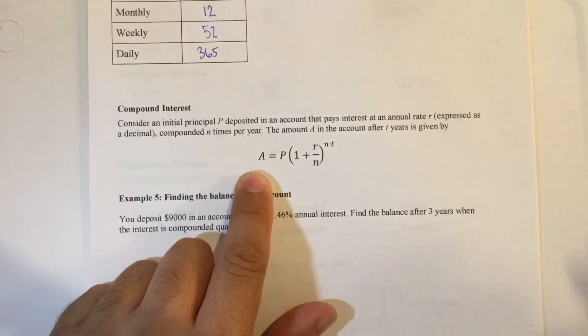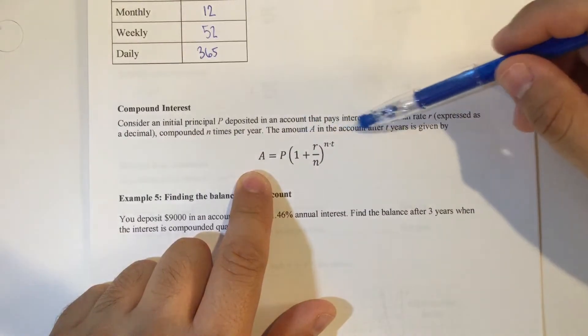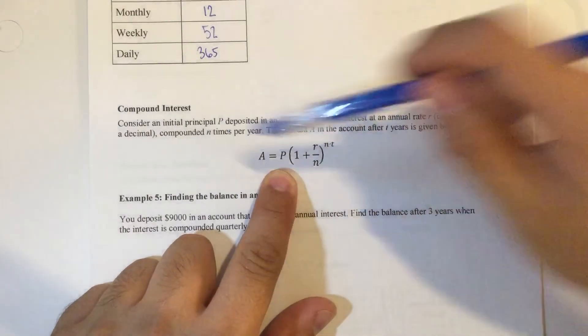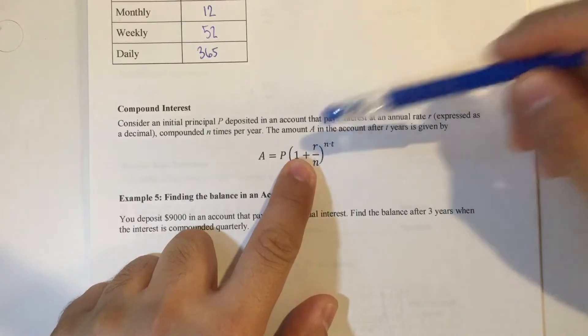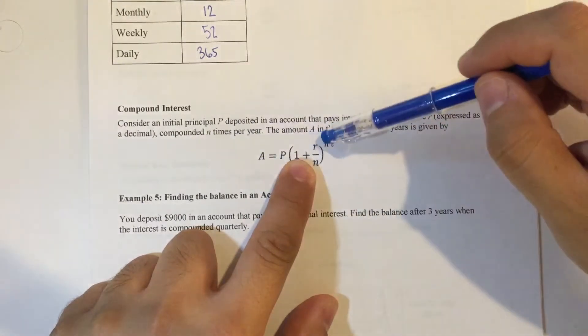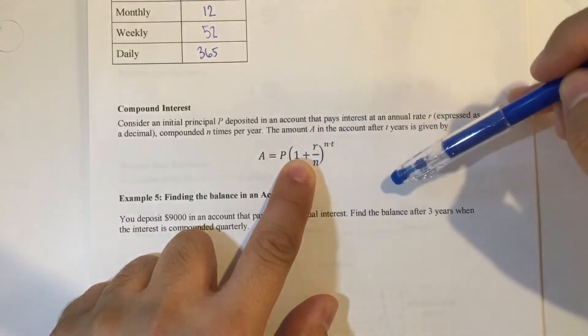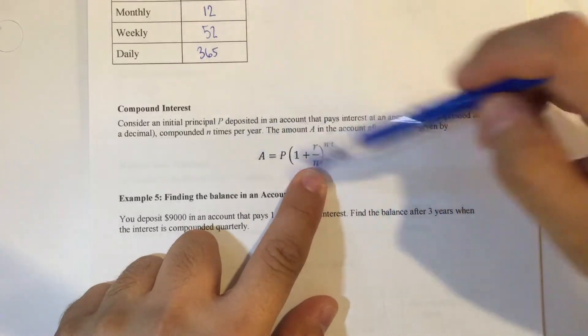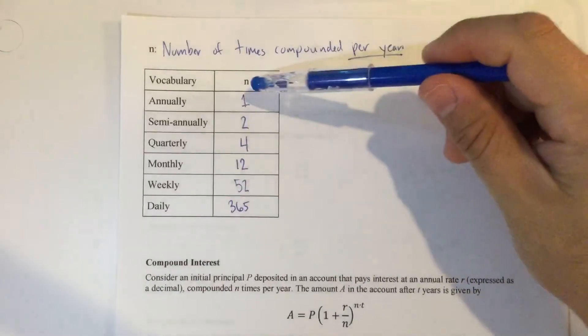Once again, A is the amount in the account after T years. P is your principal, your initial amount. One plus R is your rate, but we're going to express that as a decimal. If it's given as a percent, we convert it to a decimal. N is the number of times it's compounded in a year, which relates back to this chart here.